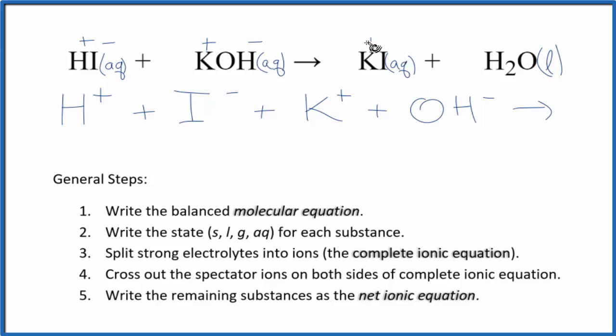For the products, we have K plus, that potassium ion, plus the iodide ion. And then for water, that's a liquid, so we don't split liquids apart in net ionic equations. This is the complete or total ionic equation for HI plus KOH.